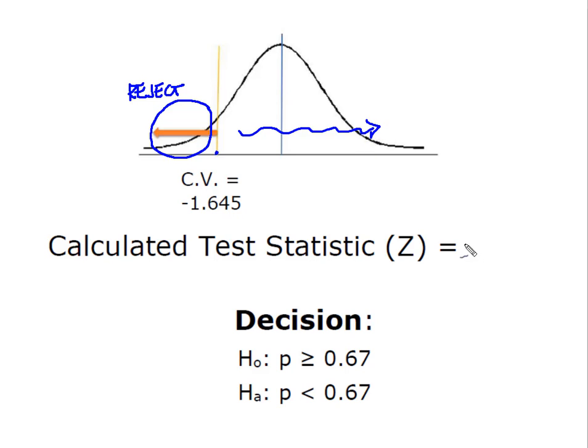Our calculated test statistic from Minitab was 0.38, and we know that falls somewhere over here. Looking at our curve, at our test statistic relative to our critical value, we can make our decision. Our decision is do not reject H0.